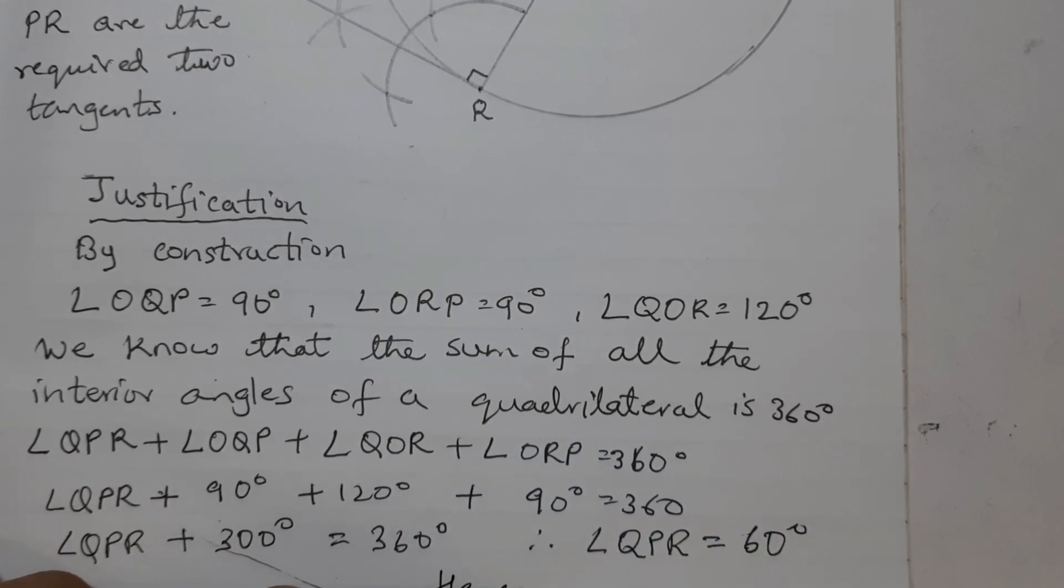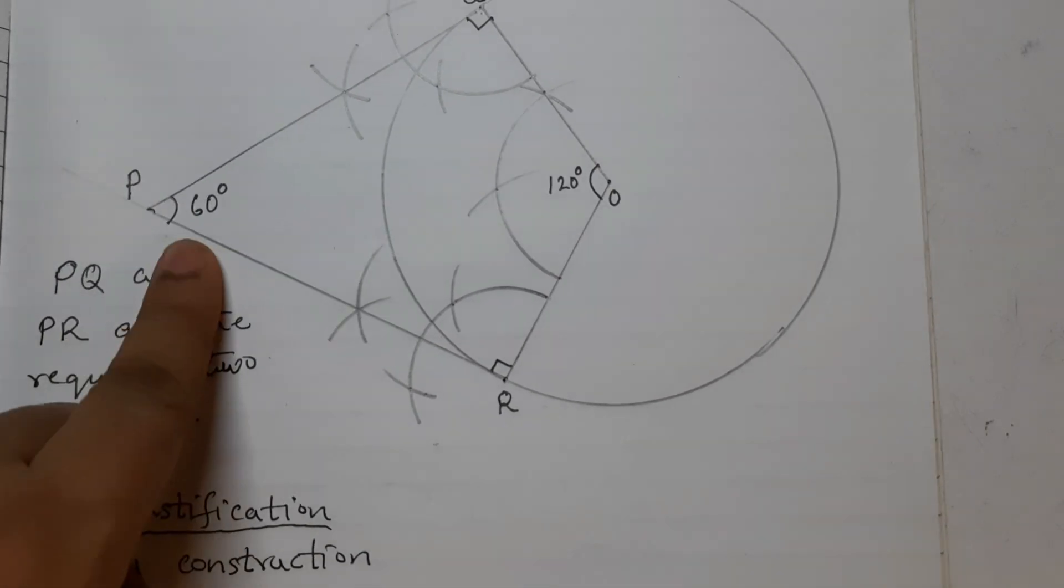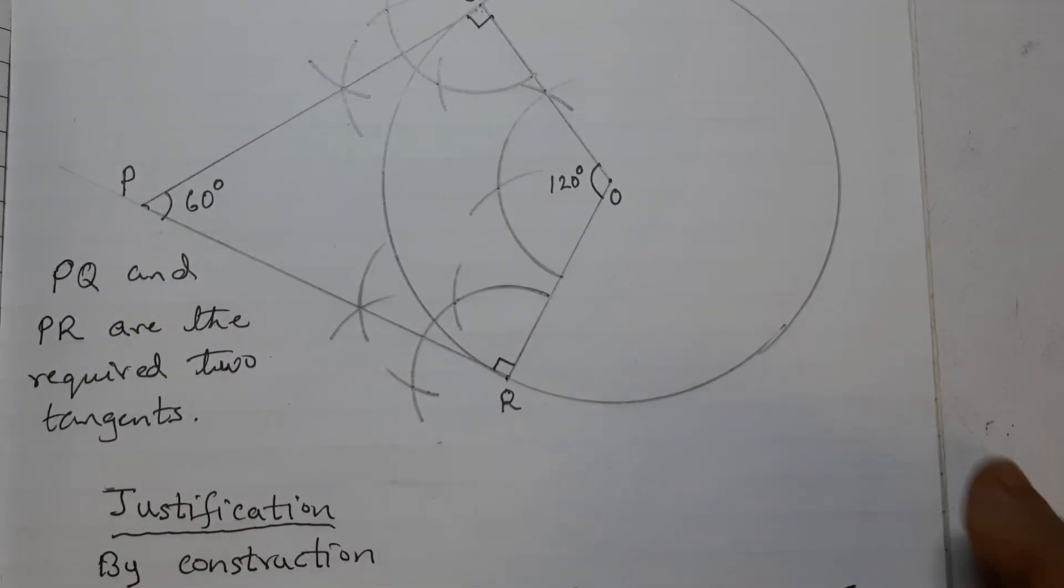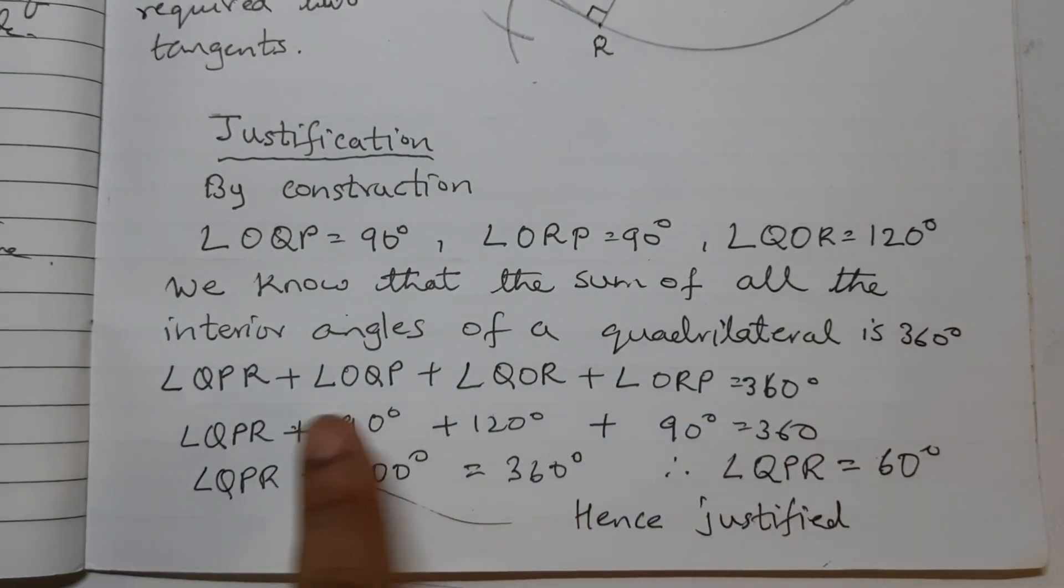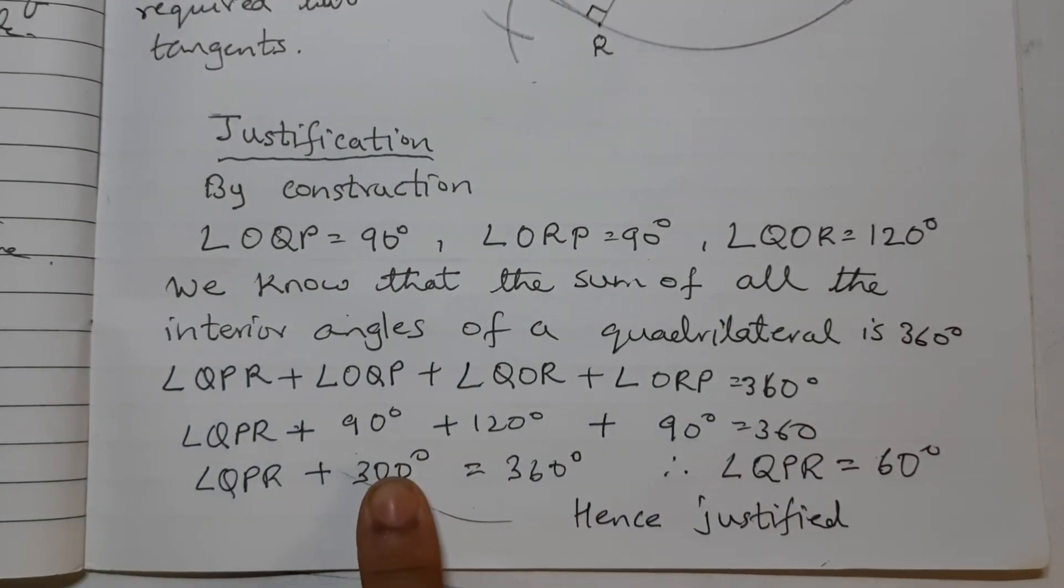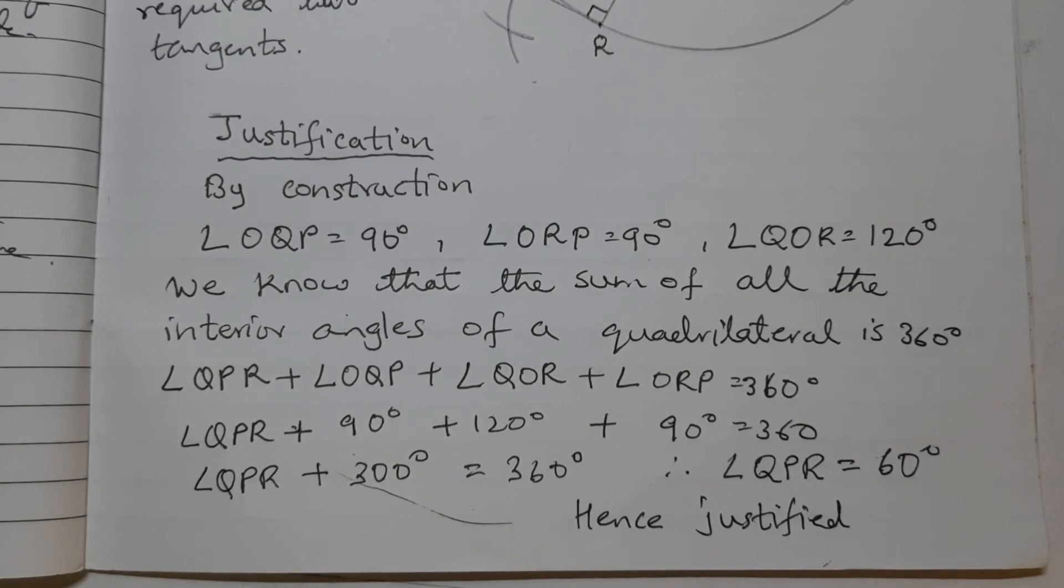Hence justified. I have shown you using the protractor also that this is 60 degrees, and by giving reason also. So you need to write this justification if asked. That's all for now. See you in the next video.